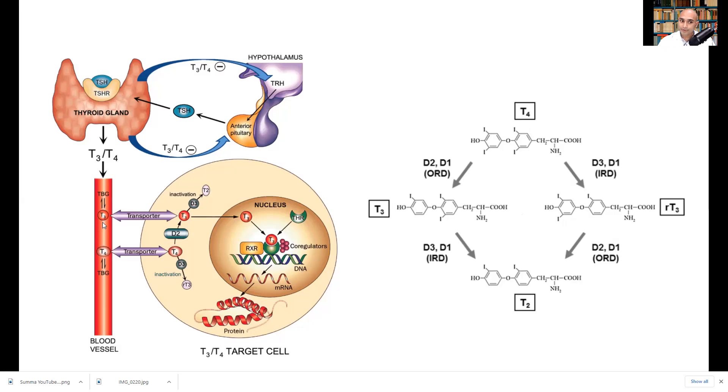So there are in the periphery, once it's released from the thyroid gland, these thyroid hormones are converted between each other. So T4, which is approximately 80% of thyroid hormone that's secreted from the thyroid gland, is converted to T3 via a special type of enzyme called the deiodinase, D2 and D3. So D2 and D3, those specific types of enzymes will convert T4 to T3. D3 and D1 will convert T4 to reverse T3, and then D3 and D1 will convert T3 to T2, and D2 and D1 will convert reverse T3 to T2.